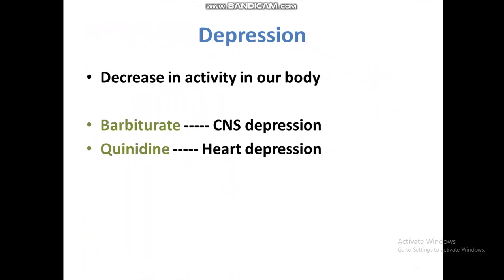Depression: some drugs work by decreasing the activity inside our body. If there is a certain activity inside our body, it will be decreased by the action of some medicine or drug. Like barbiturate, which is a central nervous system depressor. And quinidine, which causes heart rhythm depression — it depresses the heart rhythm. Quinidine is actually an alkaloid. There are many examples of stimulators, depressors, or cytotoxic drugs.